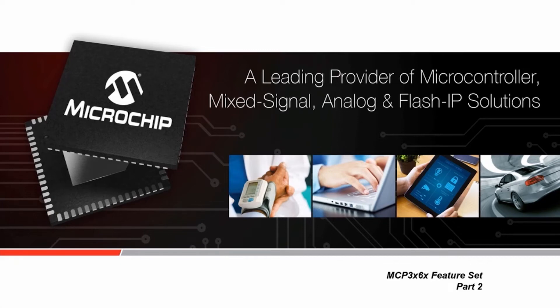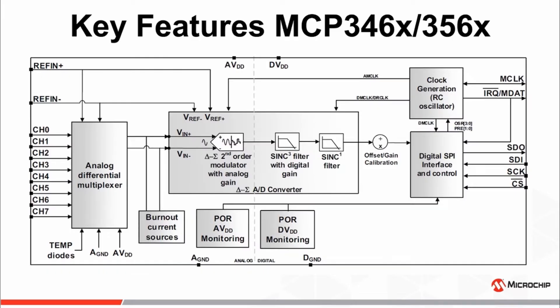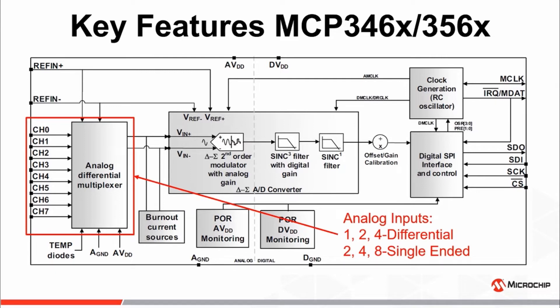Welcome to part two of the multi-part series discussing the feature functionality of Microchip's new MCP3X6X family of Delta Sigma A to D converters. In this video of the key feature series, we'll discuss the analog input multiplexer and how it can be configured for differential or single-ended operation, as well as channel scanning of the various analog inputs using the scan feature of the ADC.